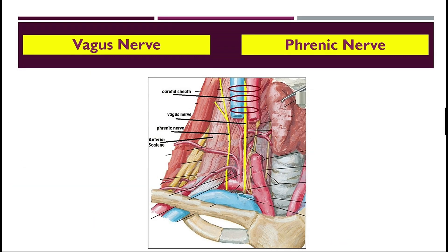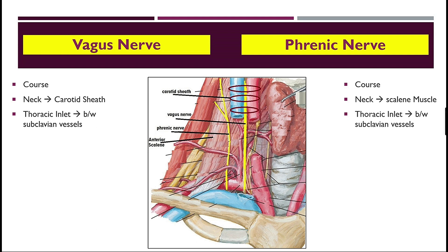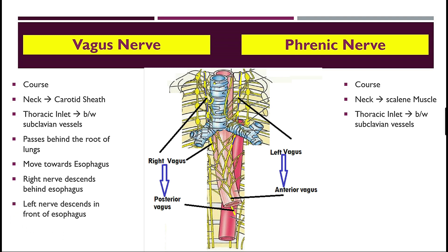The phrenic nerve's targets include the mediastinal pleura, half of the diaphragmatic pleura, fibrous pericardium of the heart, and the diaphragm. The vagus nerve enters the neck through the jugular foramen and in the neck lies in the carotid sheath with the internal jugular vein and internal carotid artery. The phrenic nerve originates in the neck and is related to the scalene muscles — for most of its course it lies on the front of the scalenus anterior muscle. Both nerves enter the thorax through the thoracic inlet, passing between the subclavian vessels — behind the subclavian vein and in front of the subclavian artery.